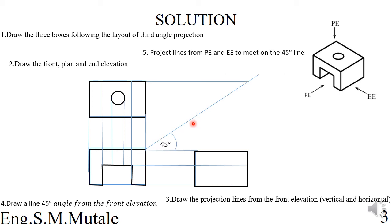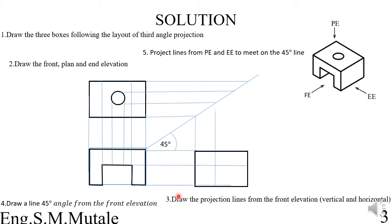Step five is to project lines from the front elevation and end elevation to meet at the 45-degree line. From the front elevation you project horizontal lines going all the way to meet that line, and from the end elevation you draw vertical lines going all the way up. Lines that go in one direction also go down to meet the 45-degree line.